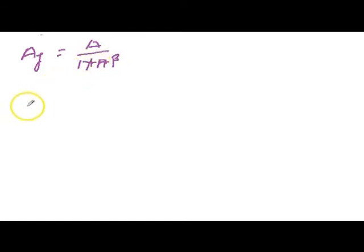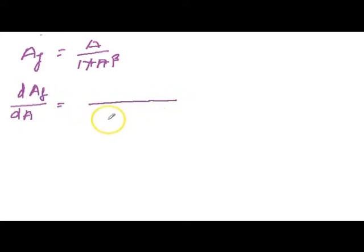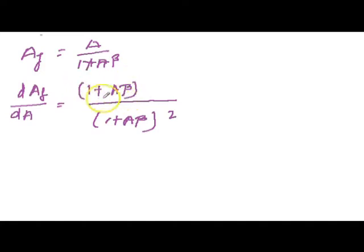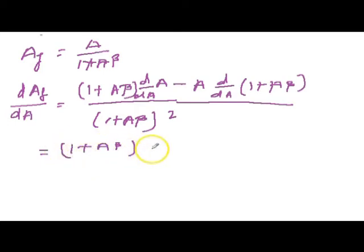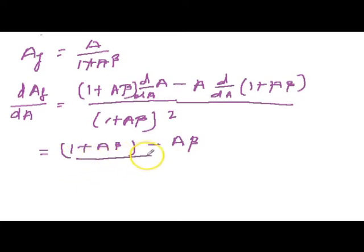Now let's think otherwise. If A·β is not greater than 1, then what happens with the negative voltage series feedback? We differentiate AF with respect to A. Using the quotient rule, the denominator is (1 + A·β)². The differential of the numerator is (1 + A·β), minus the numerator A times the differential of the denominator, which is (1 + A·β). The differential of (1 + A·β) becomes just β. So the result is divided by (1 + A·β)².